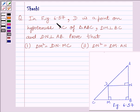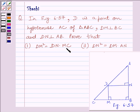In figure 6.57, D is a point on hypotenuse AC of triangle ABC. DM is perpendicular to BC and DN is perpendicular to AB. Prove that DM squared is equal to DN multiplied by MC. The second part we have to prove is DN squared is equal to DM multiplied by AN.